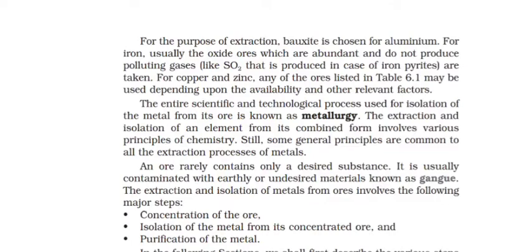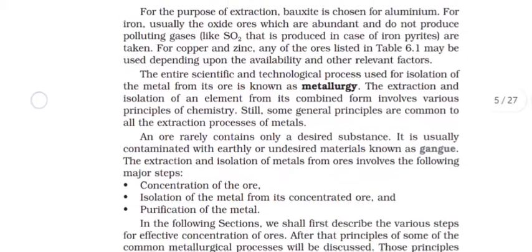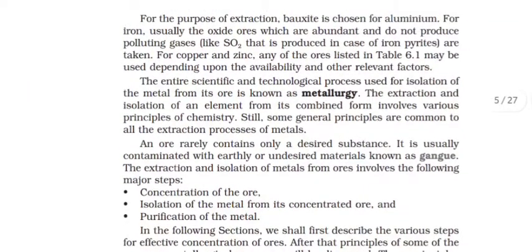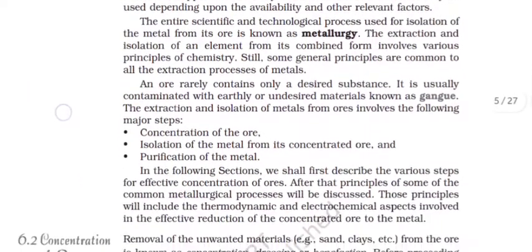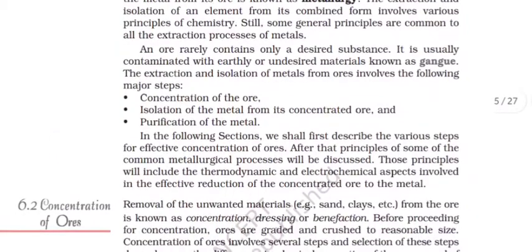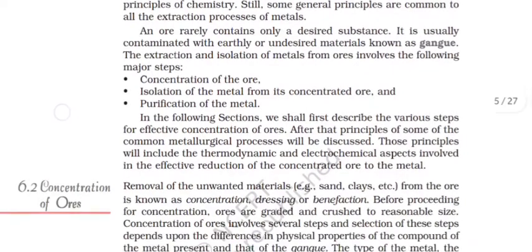Entire scientific and technological processes used for isolation of the metal from its ore is known as metallurgy. The extraction and isolation of an element from its combined form involves various principles of chemistry. Still, some general principles are common to all extraction process. An ore rarely contains only a desired substance. It is usually contaminated with earthly or undesired materials known as gangue.